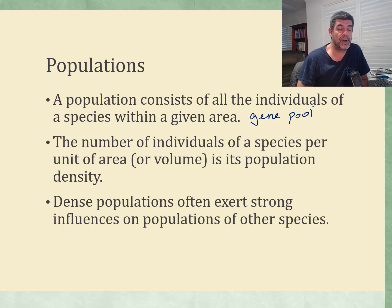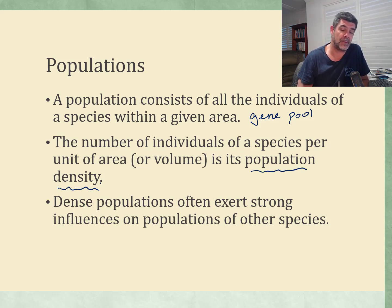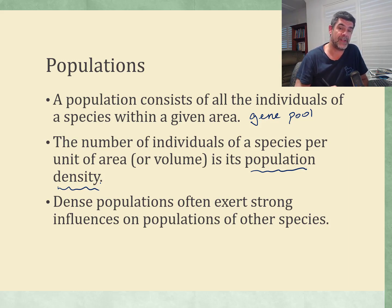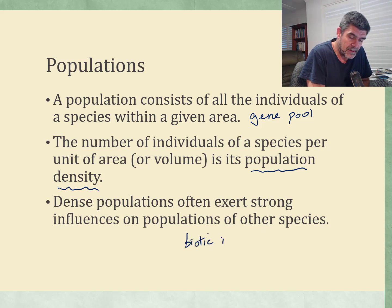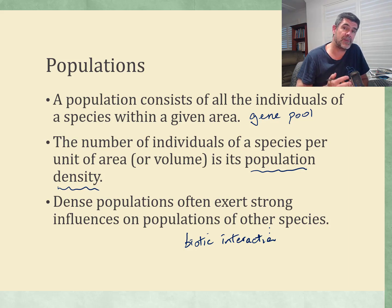The number of individuals of a species per unit area or volume is its population density. We will look at population density in a little bit more detail as we go along, because population density is often tied to the size of different individuals as well. Dense populations often exert strong influences on populations of other species, and this is the biotic interaction. There are a number of very important biotic interactions that we need to look at and analyse in terms of how those biotic interactions affect individual species and how they may ripple out throughout the ecosystem.